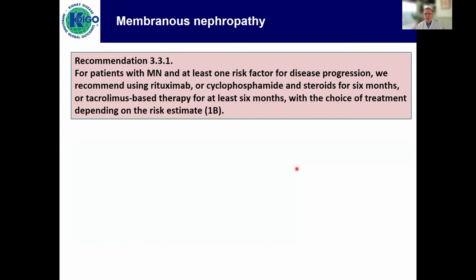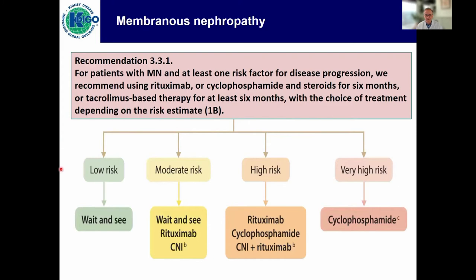Here's recommendation number one — 1B, so a fairly strong recommendation. If you have at least one risk factor for disease progression, we would recommend either rituximab or cyclophosphamide and steroids (the Ponticelli regimen), or a tacrolimus-based therapy for at least half a year, with the choice of treatment depending on the risk estimate. Wait and see is an option for lower risk. High risk: you should use immunosuppression. Very high risk — thanks to the beautiful studies out of India, Vivek Jha's studies — we know that cyclophosphamide can really retard progression to dialysis, so in the very high-risk patient we would still support cyclophosphamide.